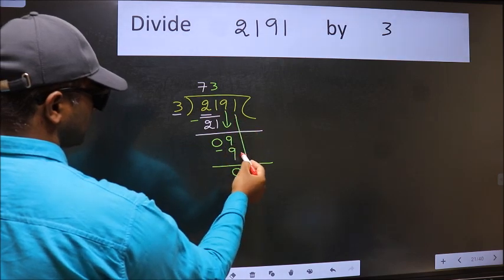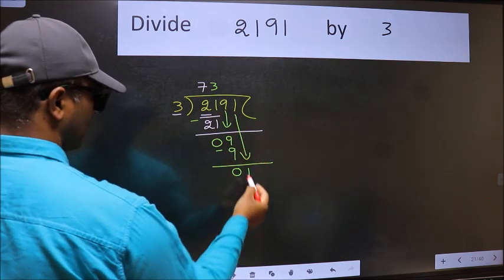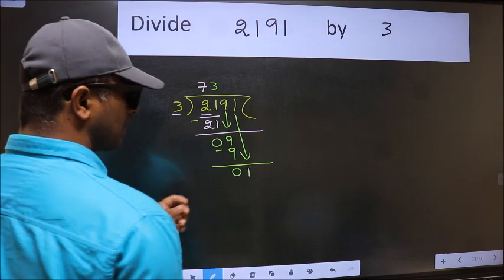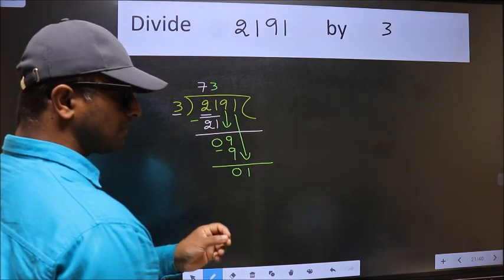After this, bring down the beside number. So 1 down. After this step, the mistake happens. And the mistake is this.